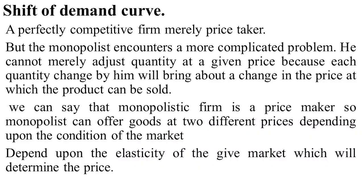The shift of demand curve. A perfectly competitive firm merely adjusts the quantity of output it has to produce, price being given and constant for the firm — there is a general supply relationship between price and quantity. But the monopolist encounters a more complicated problem. He cannot merely adjust quantity at a given price, because each quantity he charges will bring about a change in the price at which the product can be sold.